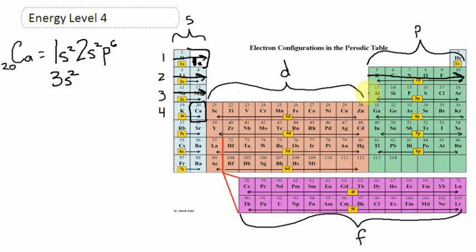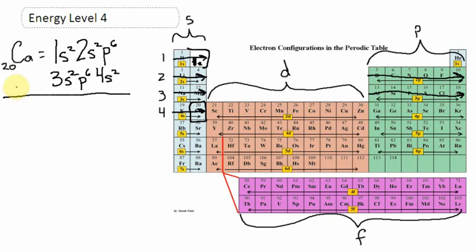Now let's travel into the p's. On the third energy level, the p can hold six electrons — 3s2, 3p6. And lastly, that leaves us with 4s2. The fourth energy level, the s orbital will hold two electrons. So this is the electron configuration of calcium: 1s2, 2s2, 2p6, 3s2, 3p6, 4s2. That tells me where the 20 electrons that calcium has are located in its electron cloud.